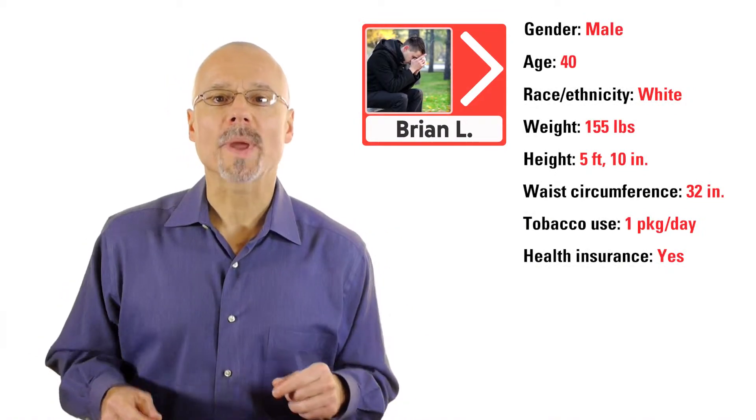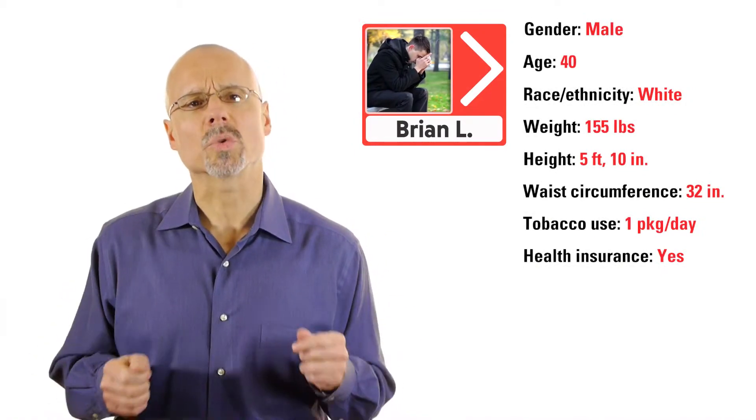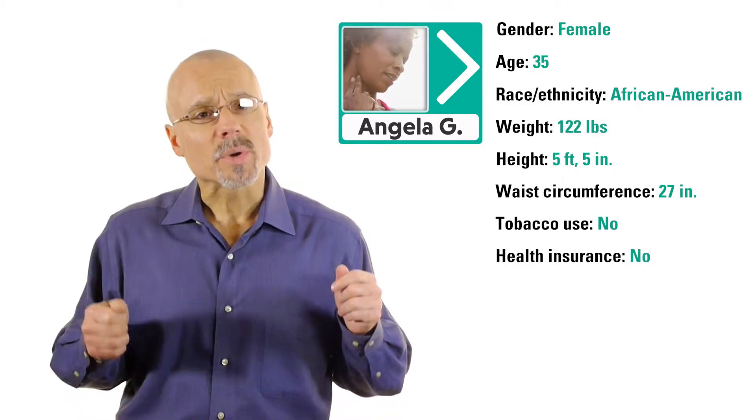Brian is a 40-year-old man who's feeling a lot of stress about school and family. He also smokes cigarettes. Finally, meet Angela. She's 35 with a very active, healthy lifestyle, but due to her family history, she still might be at risk for cardiovascular or heart disease.